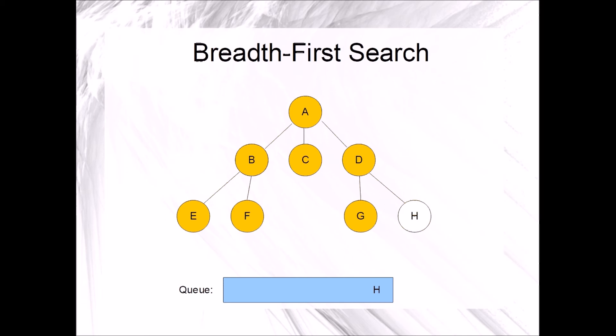Since the queue is not empty, we will have another repetition of the while loop. After this final iteration, the while loop terminates, and so does the breadth-first search algorithm. All of the nodes have been visited and marked.